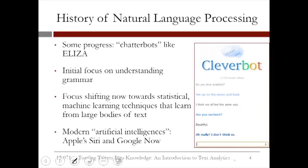Let's discuss briefly the history of natural language processing. There has been some progress, for example, the chatbot ELIZA. The initial focus has been on understanding grammar. Later, the focus shifted towards statistical machine learning techniques that learn from large bodies of text. Today, there are modern versions of natural language processing — Apple is using Siri and Google is using Google Now.